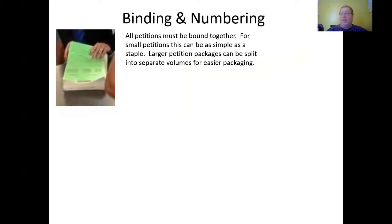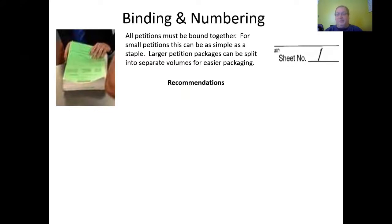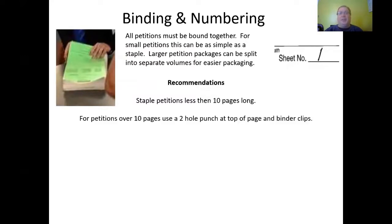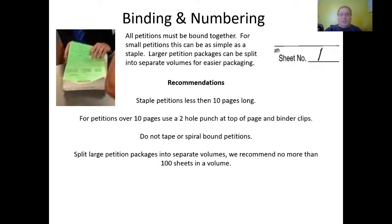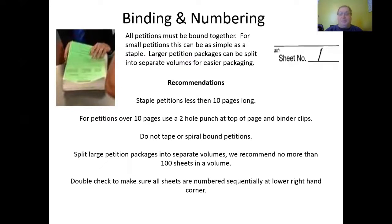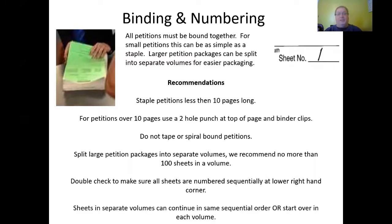Binding and numbering: all petitions must be bound together. For small petitions, this can be as simple as a staple. Larger petition packages can be split into separate volumes for easier packaging. Our recommendations are that you staple petitions less than 10 pages long. For petitions 10 pages and over, use a two-hole punch at the top of the page and binder clips. Do not tape or spiral bind petitions — we will immediately remove that tape and spiral binding so we can scan in those petitions. Split large petition packages into separate volumes; we recommend no more than 100 sheets in a volume. Double-check to make sure all sheets are numbered sequentially at the lower right-hand corner.